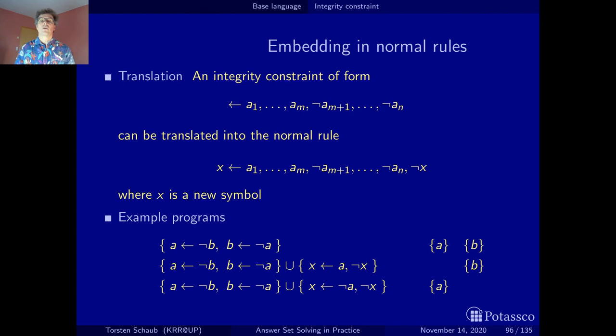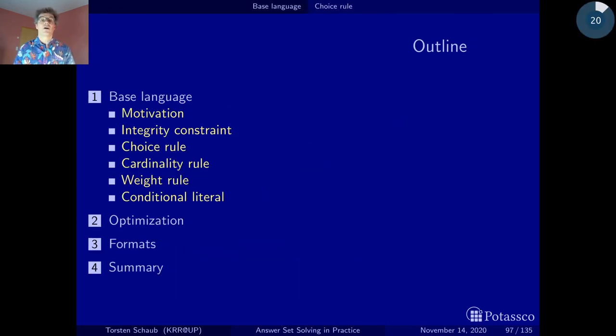to introduce one auxiliary atom and translate all integrity constraints in such a way, and then they are handled just like normal rules. Now that you've seen the very easy trick with integrity constraints, let's see how things work out with choice rules.